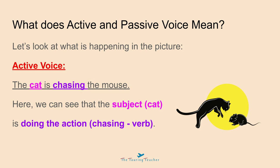What does active and passive voice mean? Let's look at what is happening in this picture. We can see that a cute little cat is chasing a mouse. The sentence in active voice is: the cat is chasing the mouse. Here we can see that the subject, which is the cat — shown in pink — is doing the action of chasing, which is the verb. Because the subject is doing the action, we can tell that it is active voice.